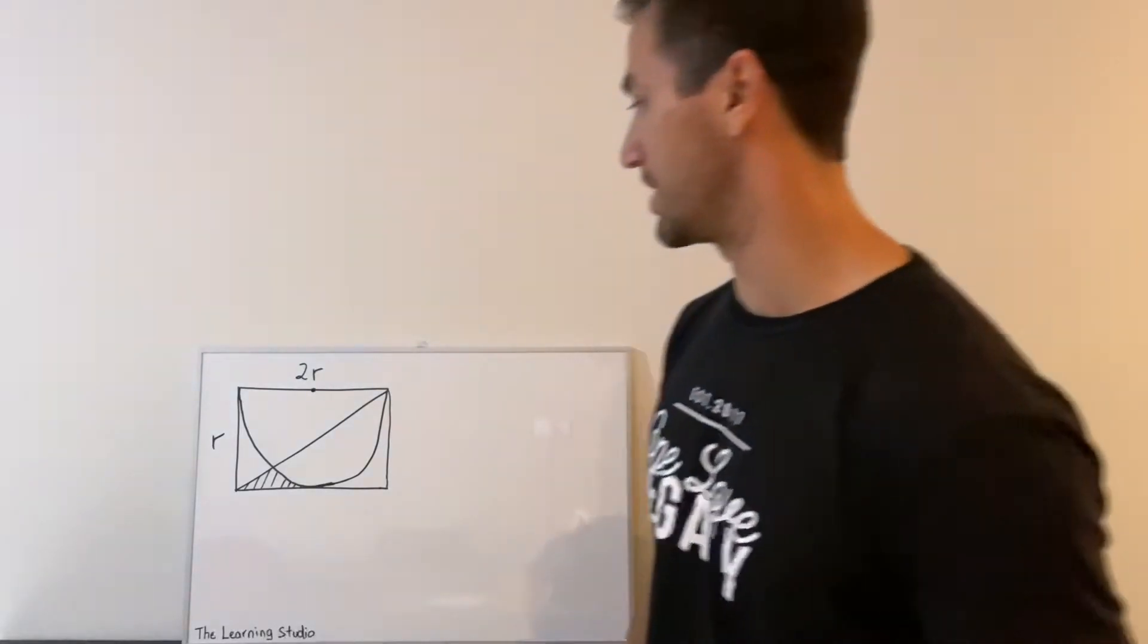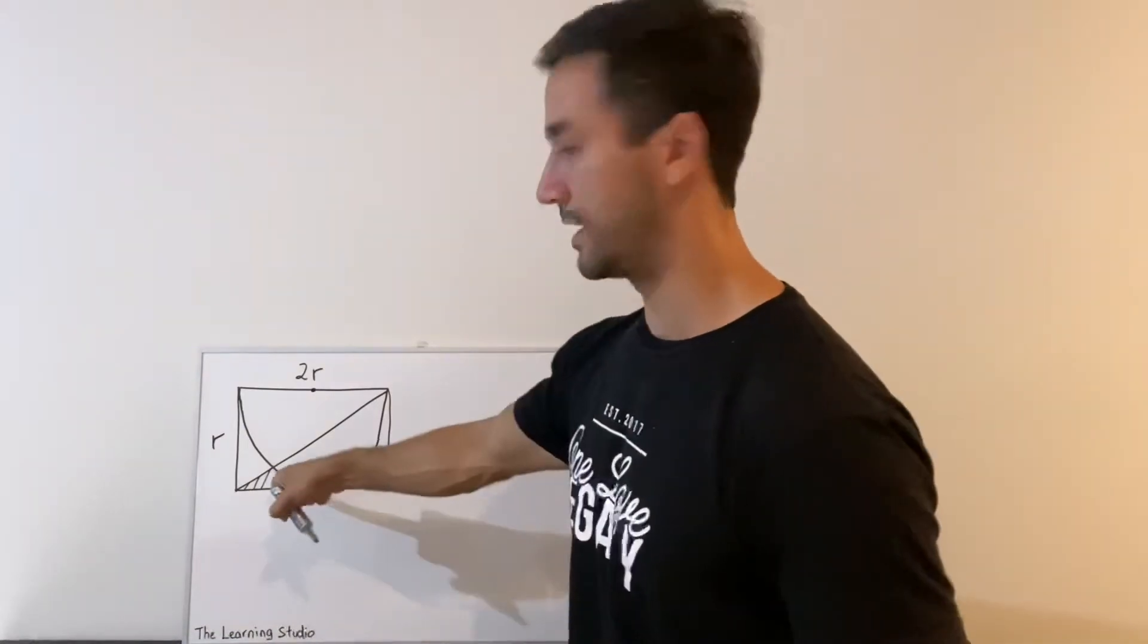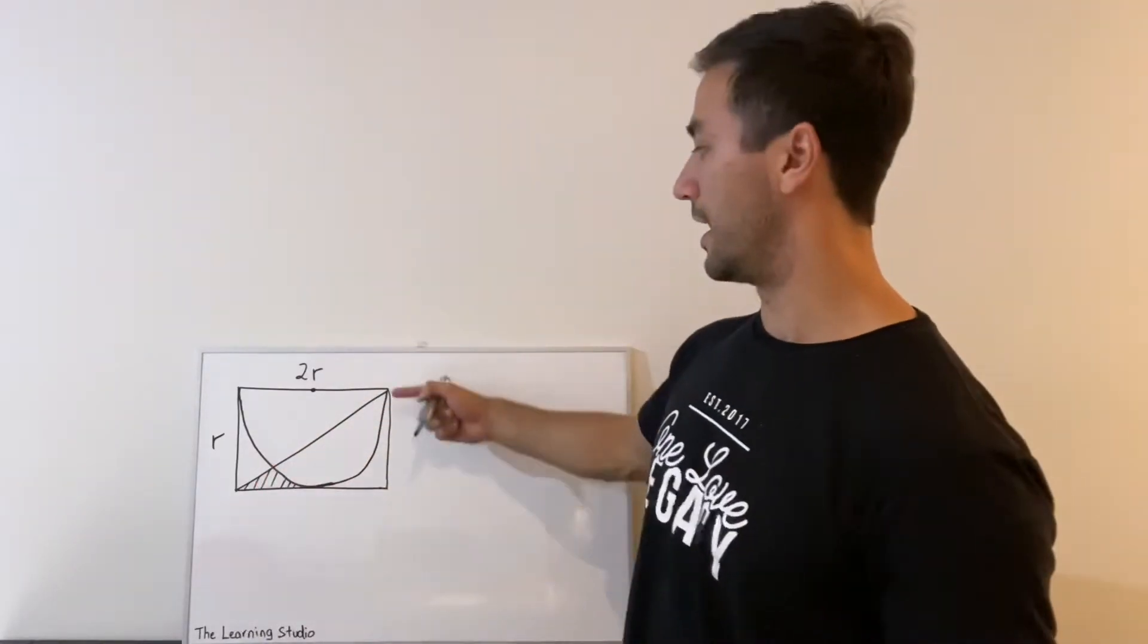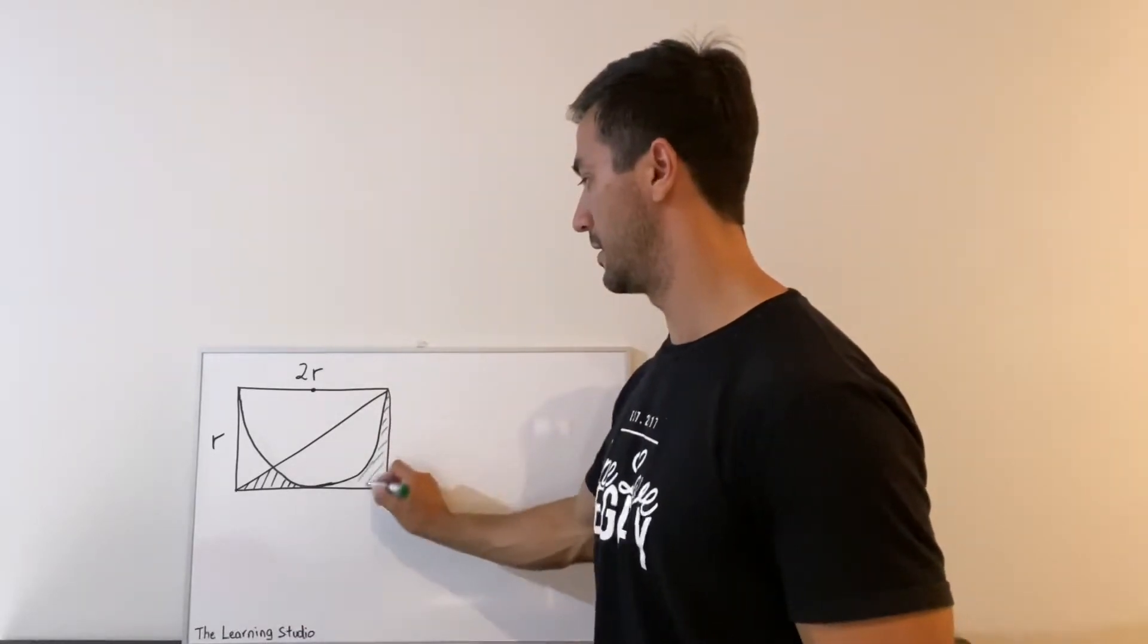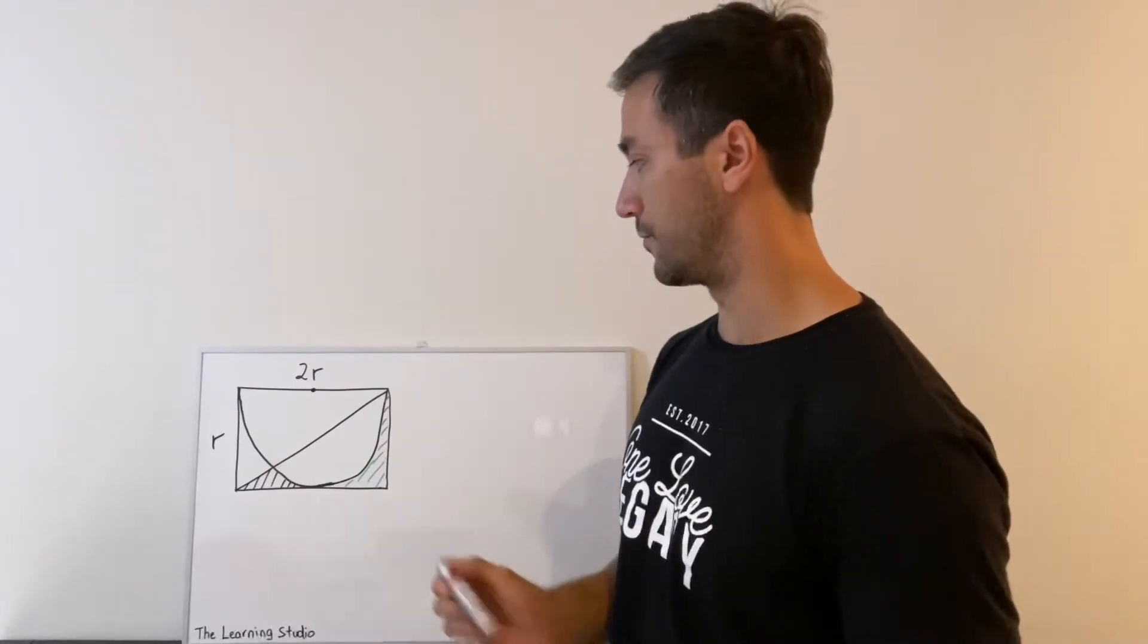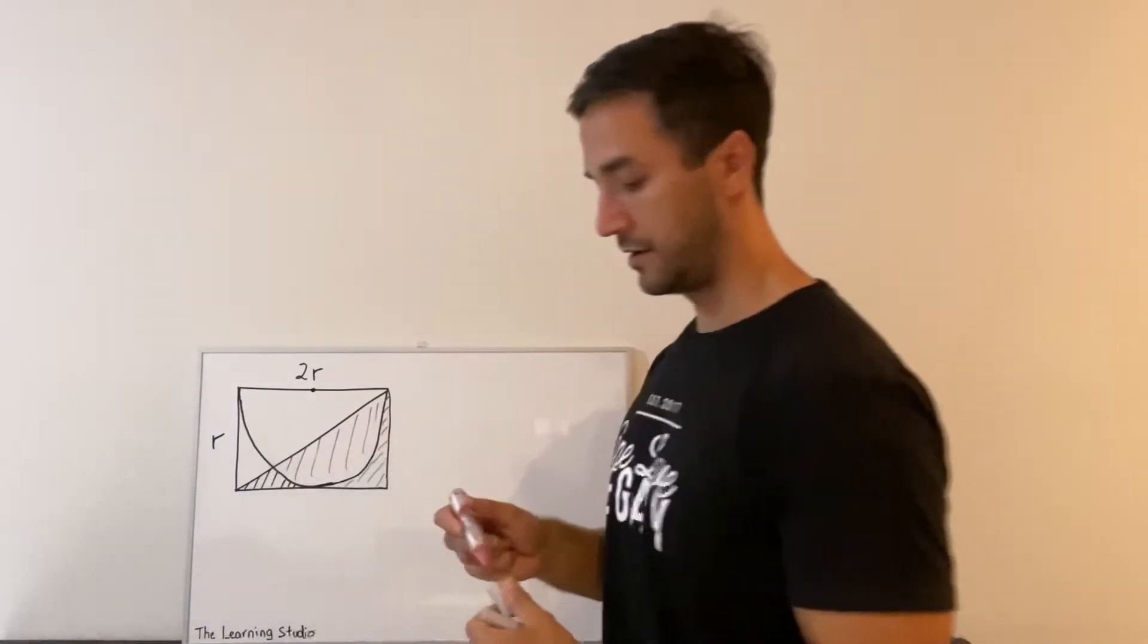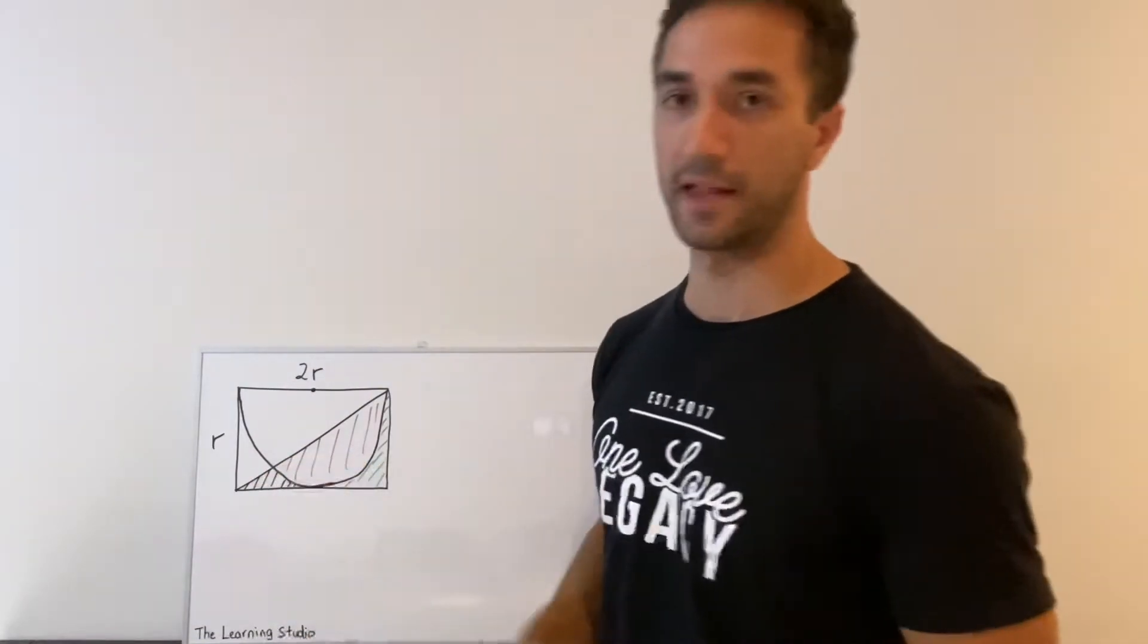I think the general strategy is not too hard to come up with. If we want this little shaded section down here, hopefully it's easy to see that if we know the area of the triangle, we can just subtract off this section here, this green section, and we can subtract off this red section here. And if we do that, that'll leave us with that little black section there.